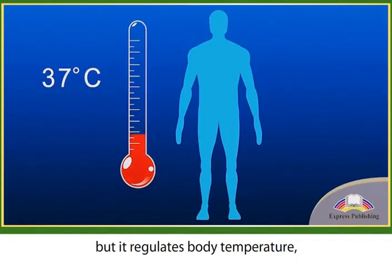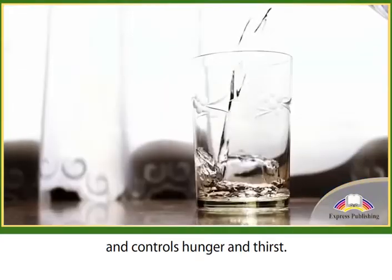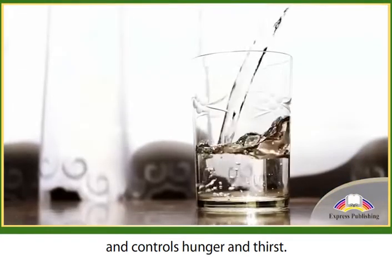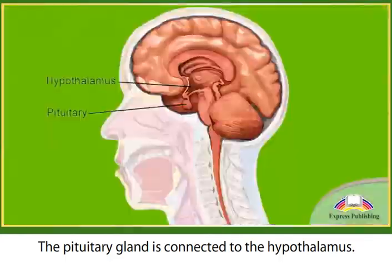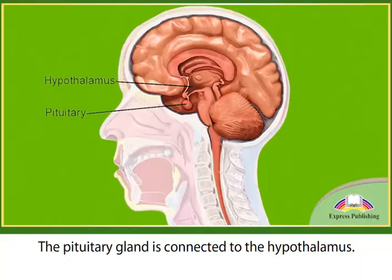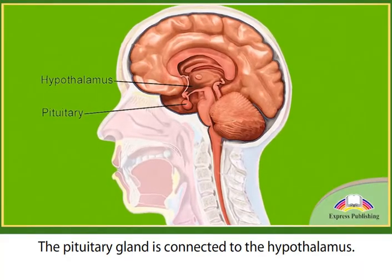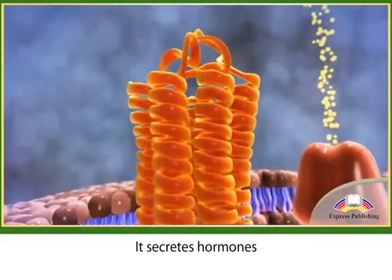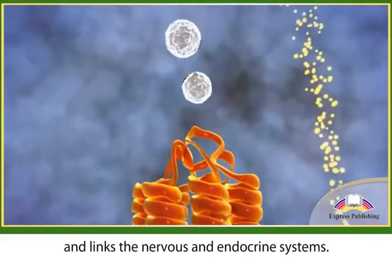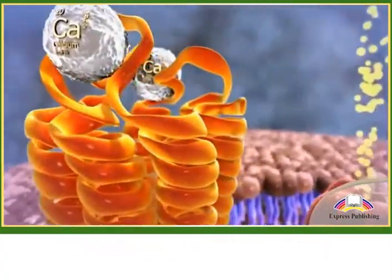but it regulates body temperature, blood pressure and hormones and controls hunger and thirst. The pituitary gland is connected to the hypothalamus. It secretes hormones and links the nervous and endocrine systems.